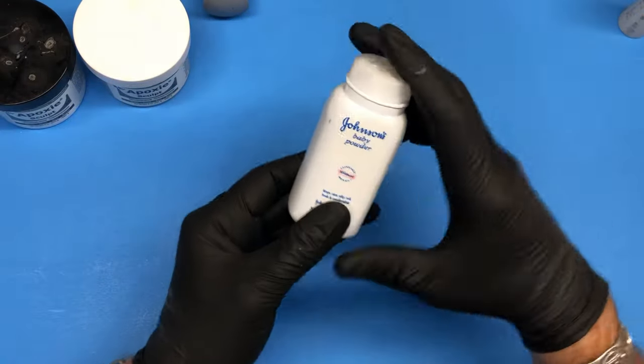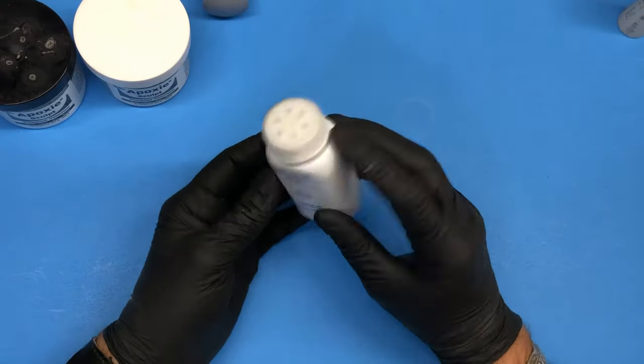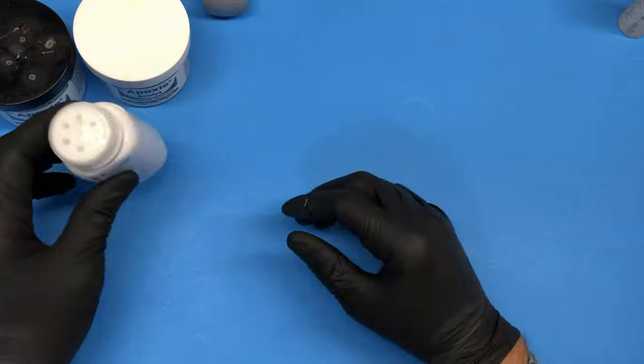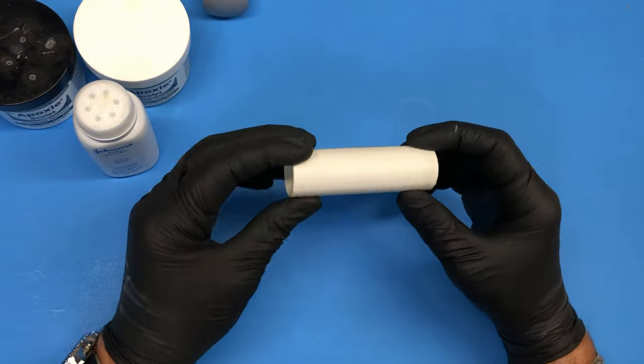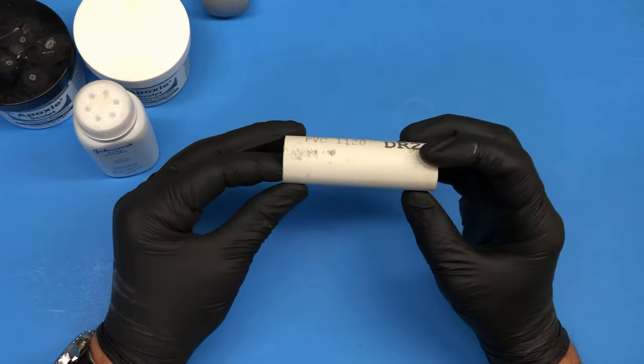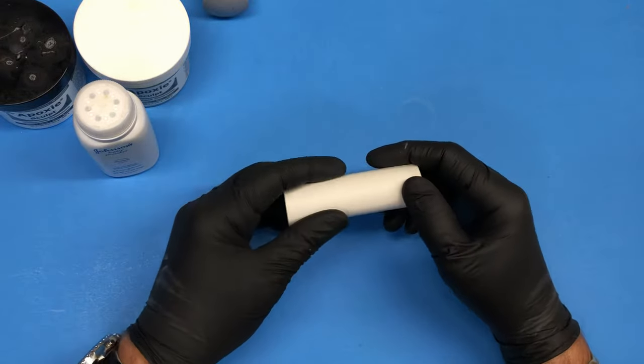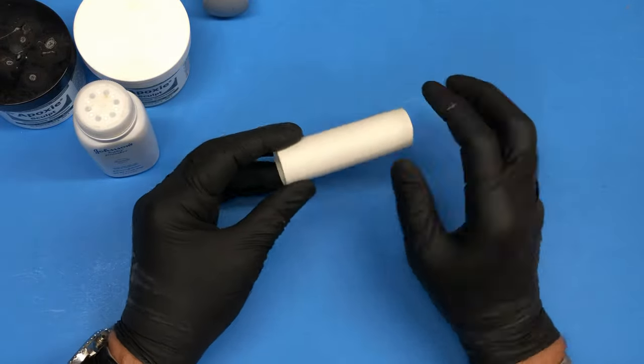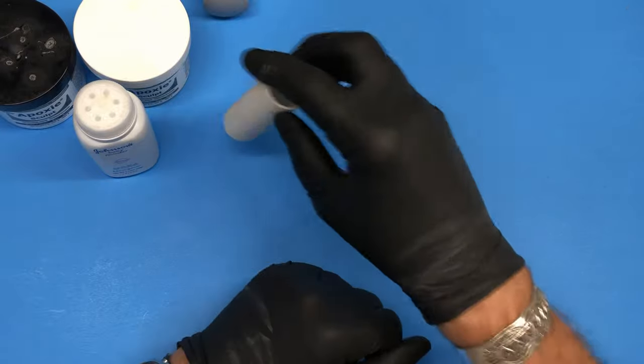Then we need some baby powder—just simple talcum powder, doesn't cost much. We need a round object, like in this case a PVC pipe, but you can use anything, even a bottle. Anything with a smooth, round surface will work.